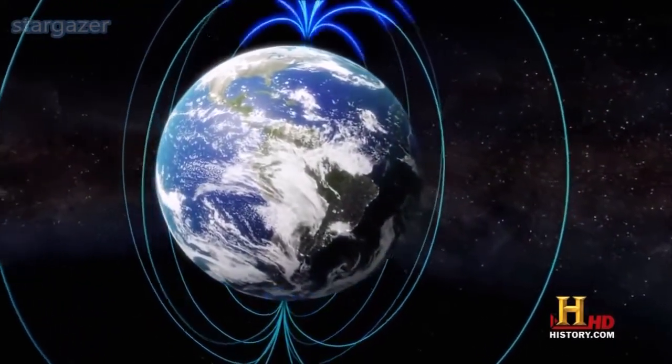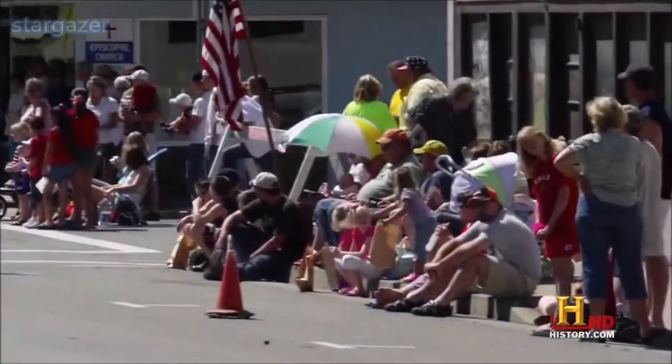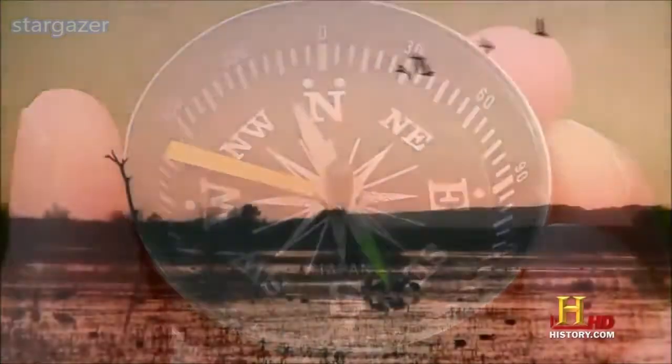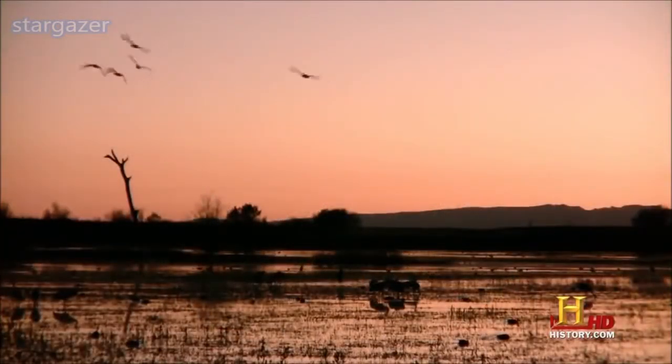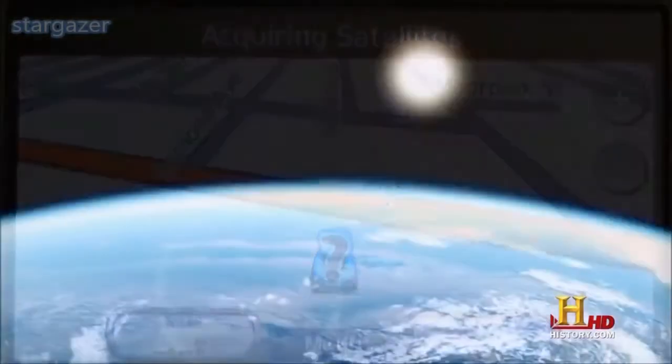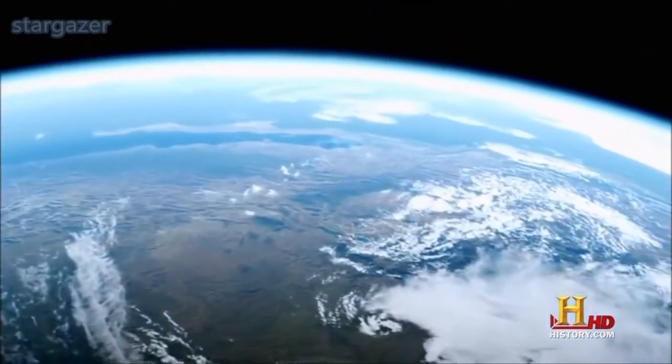No one is sure how a pole reversal will affect human life. Compasses will point south. Bird migrations might be disrupted. GPS navigation will be affected. But there is a more disturbing consequence.